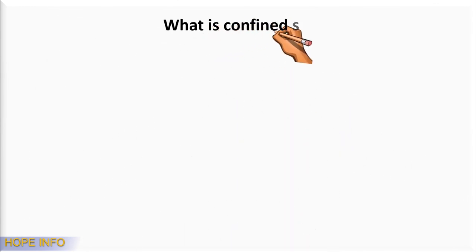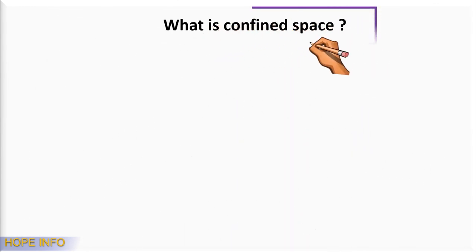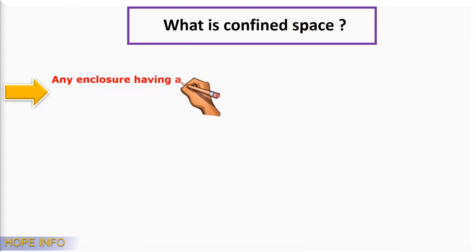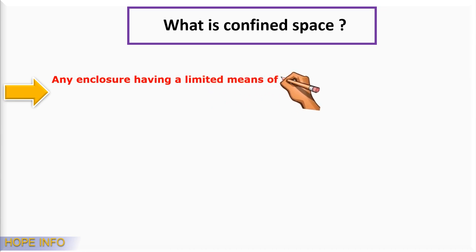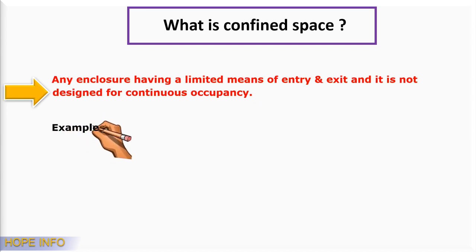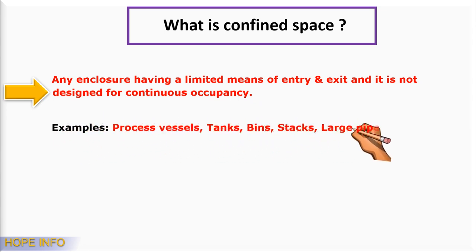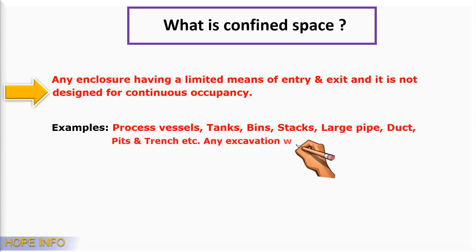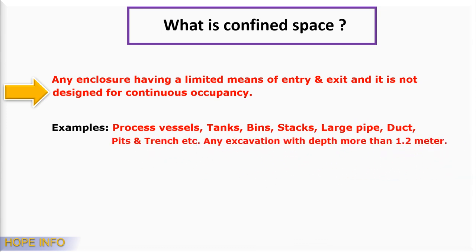What is a confined space? A confined space is an enclosure having a limited means of entry and exit that is not designed for continuous occupancy — for example, process vessels, tanks, bins, ducts, large pipes, pits, trenches, and excavations with a depth of more than 1.2 meters.